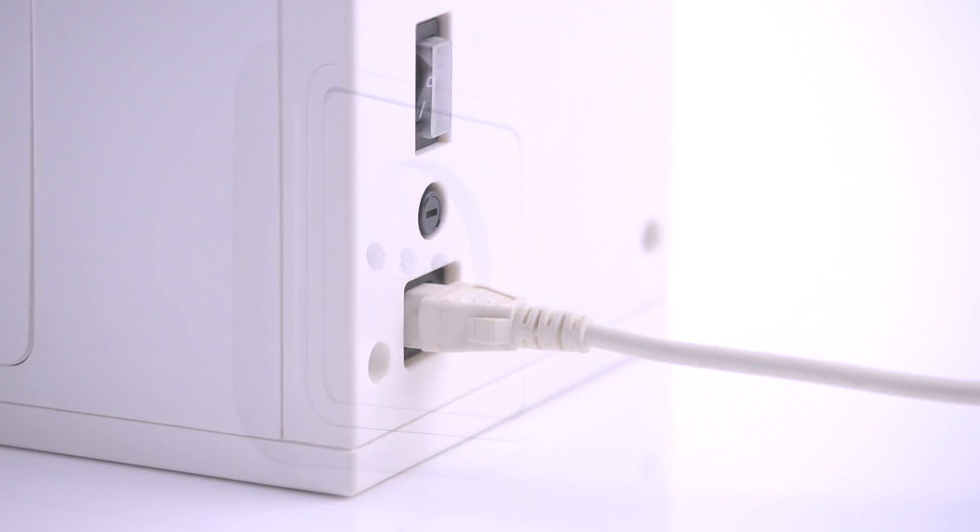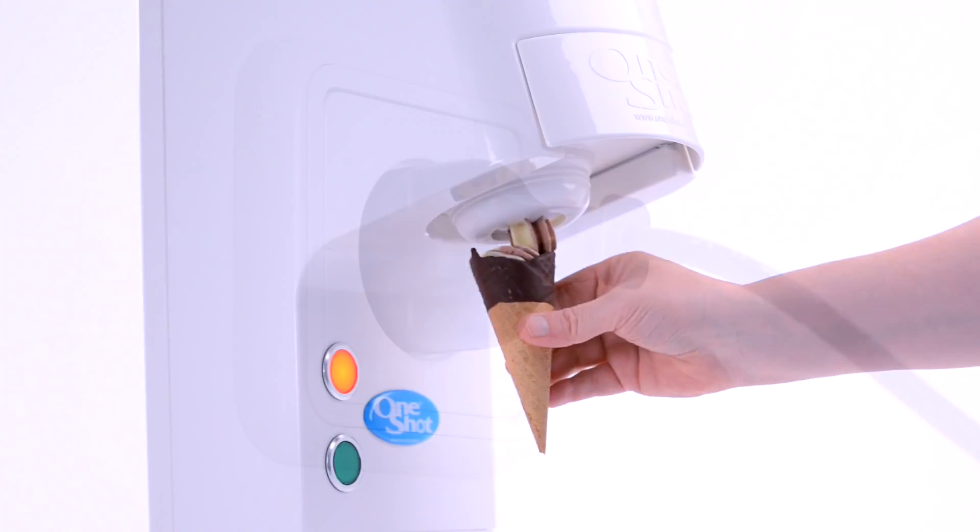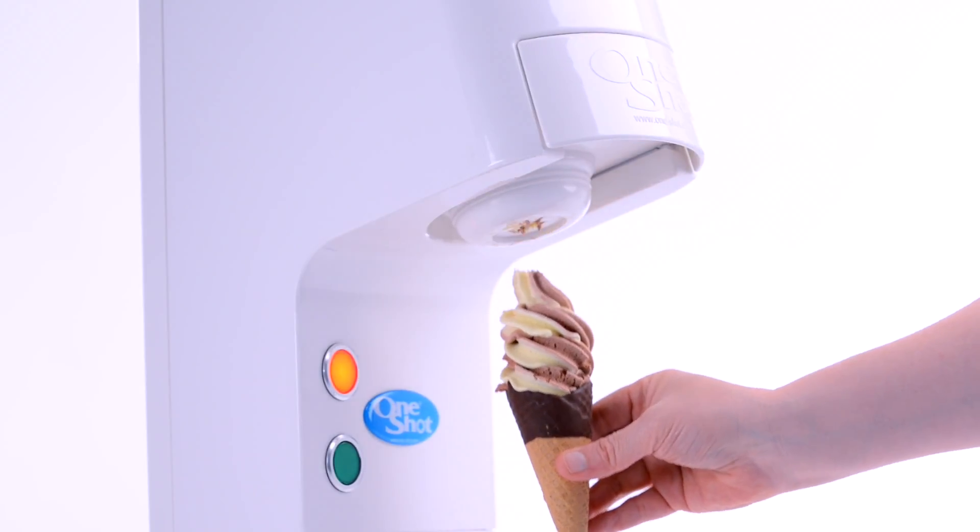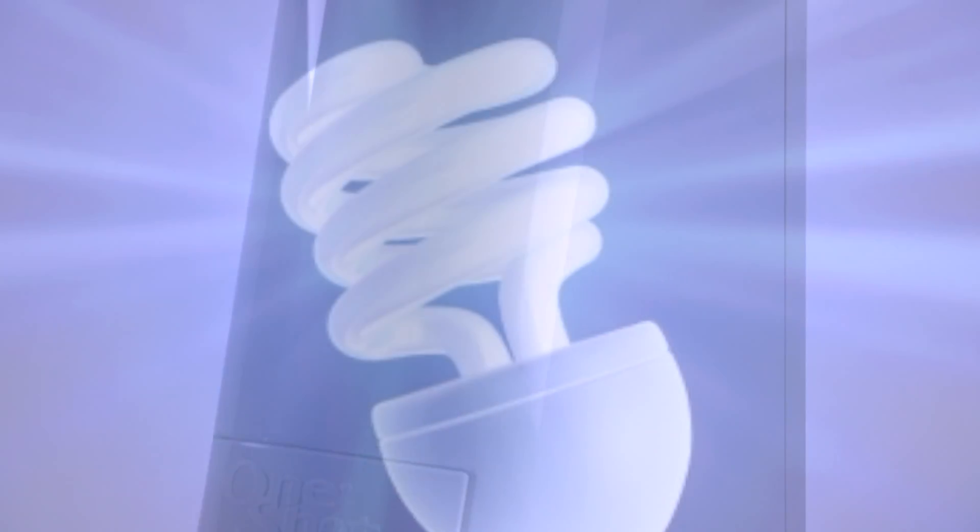Plugged into a standard socket with no special wiring, One-Shot dispensers use energy only when dispensing, and with only one moving part, at their maximum dispensing capacity serving up to 240 portions per hour. They use no more energy than a standard domestic light bulb.